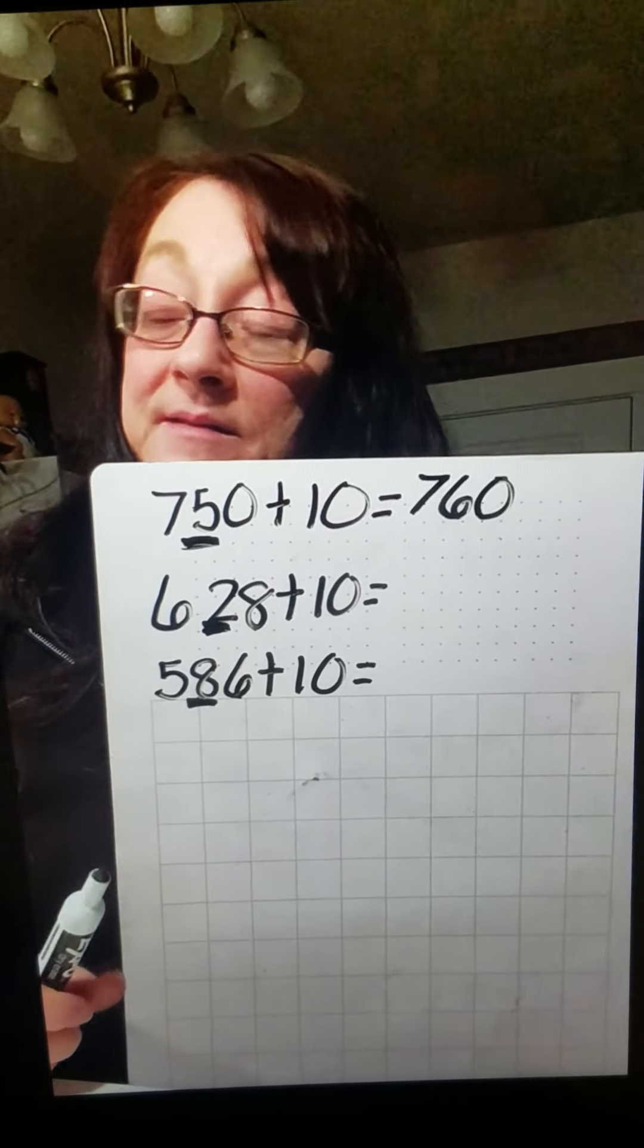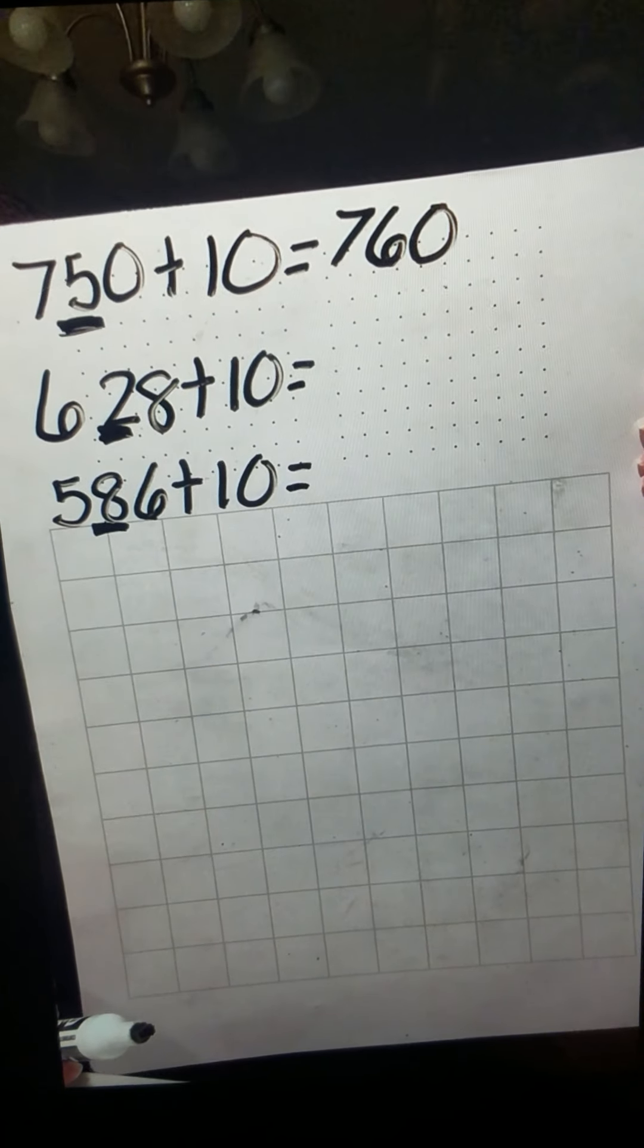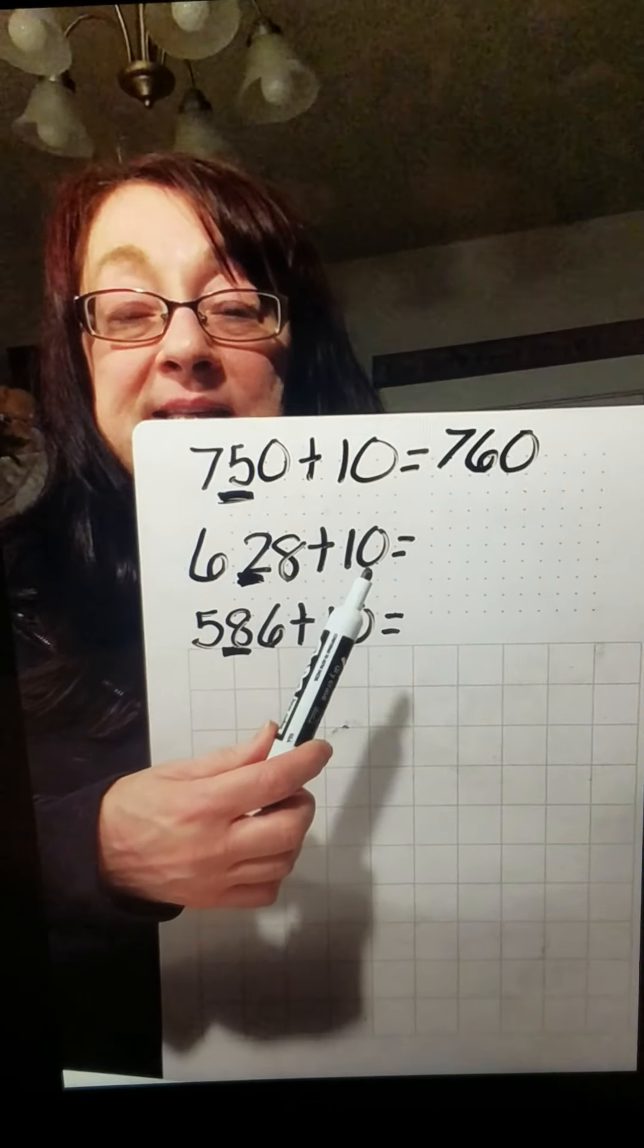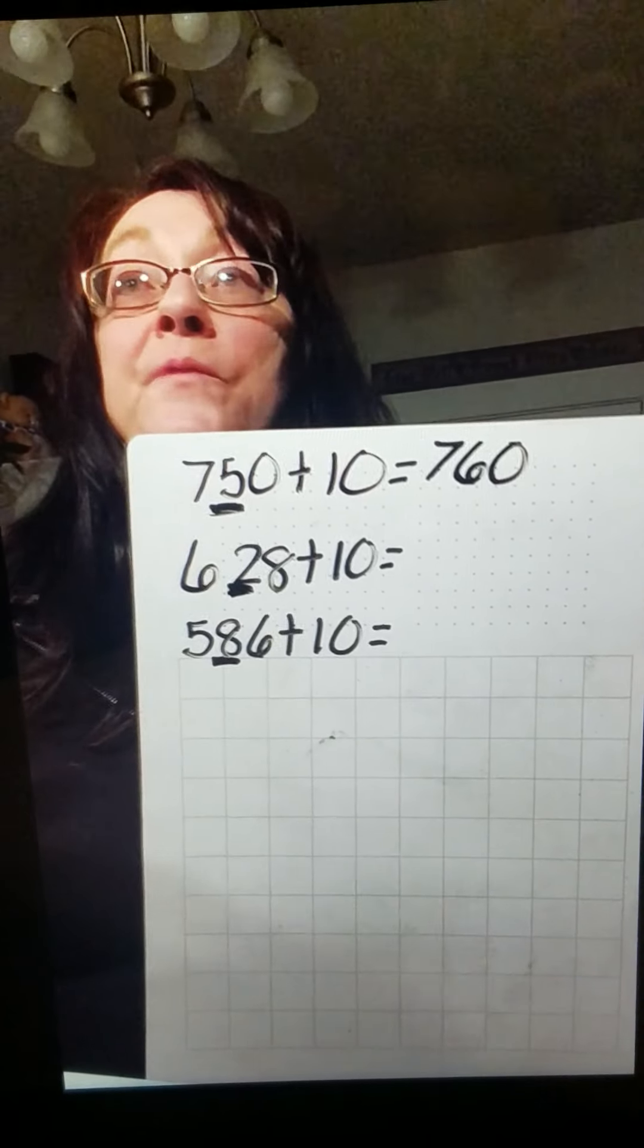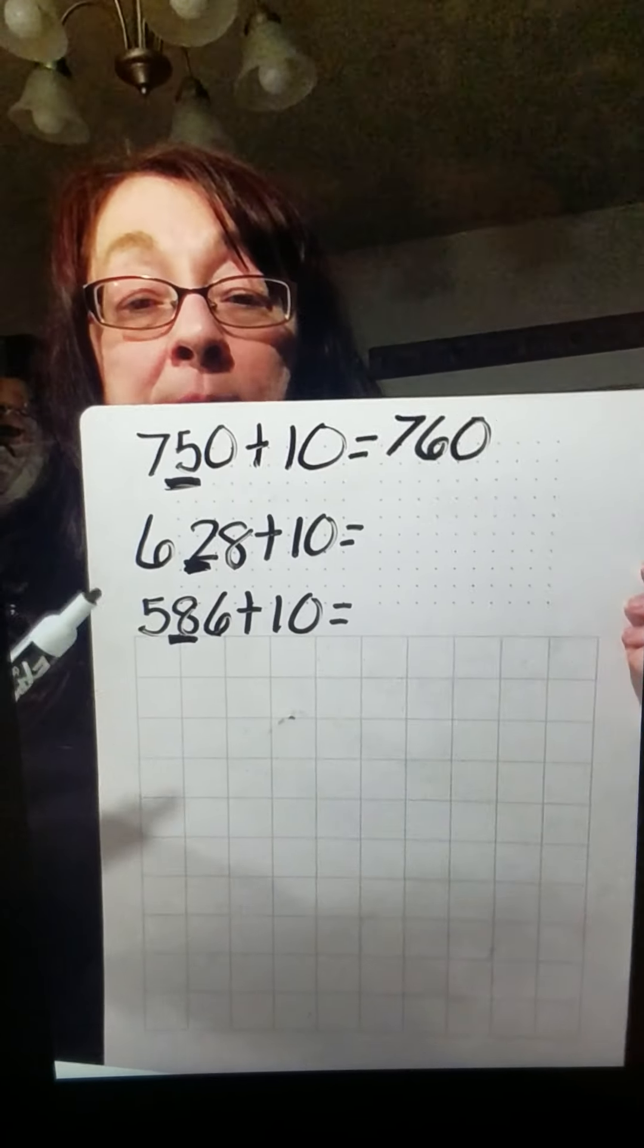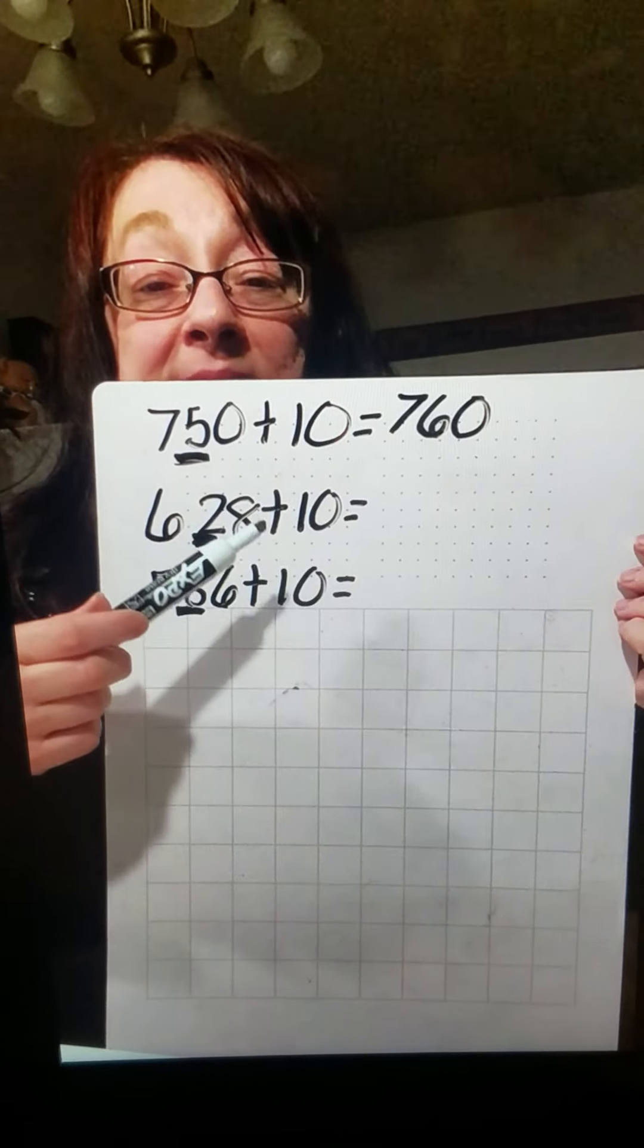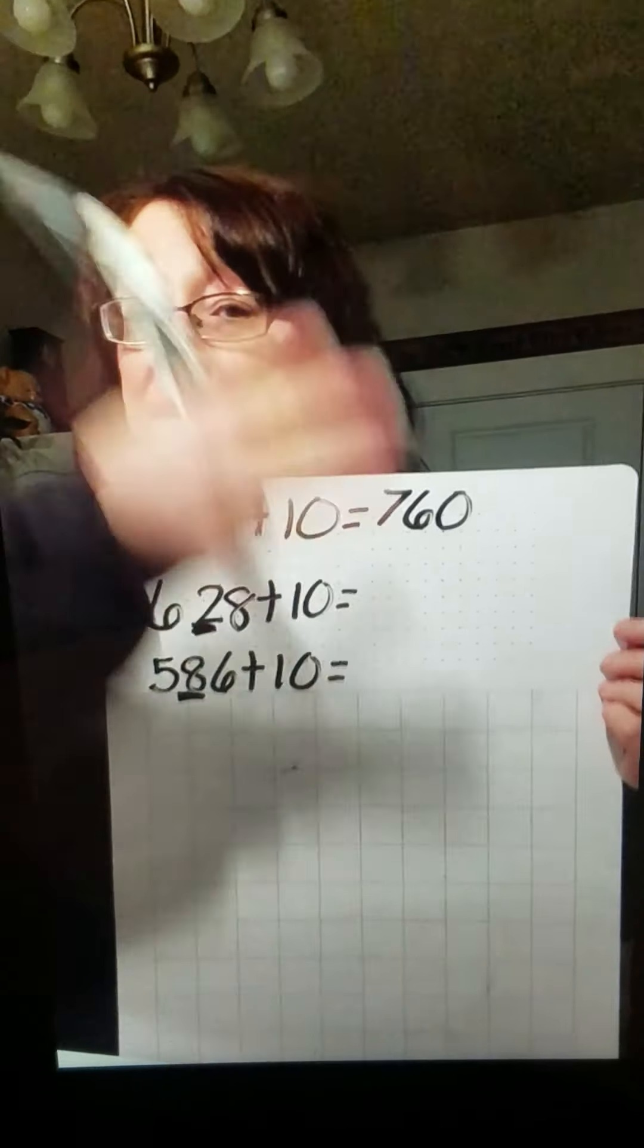This one is a little bit different. This says 628 plus 10. Shouldn't be hard, though, because we're just adding another group of 10 to the 2. So if we have two groups of 10 and we add one more group of 10, instead of having 628...